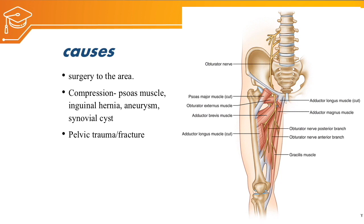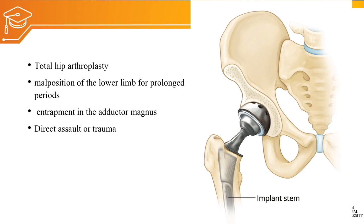Main causes of obturator nerve injury include: surgery at the level of the pelvis such as hysterectomy or abdominal surgery; compression; inguinal hernia; aneurysm at the iliac artery; synovial cyst; trauma to the pelvis such as fracture; total hip arthroplasty; malposition of the lower limb for a prolonged period; entrapment in the adductor magnus; or direct injury to the nerve.